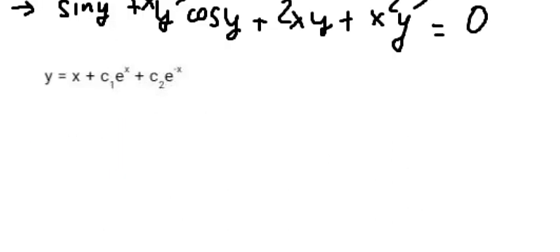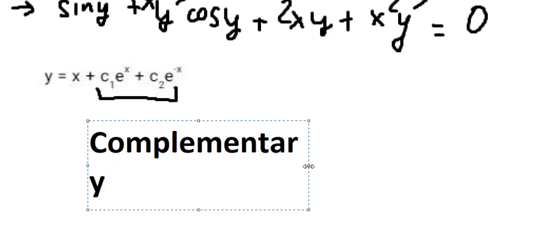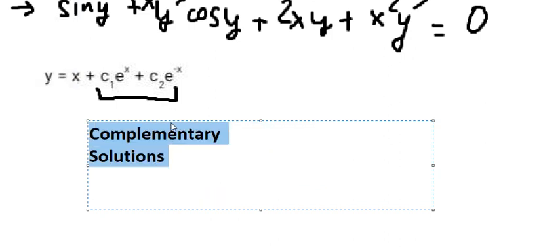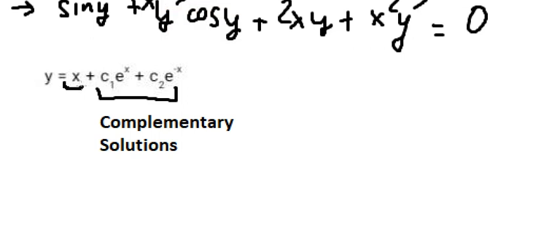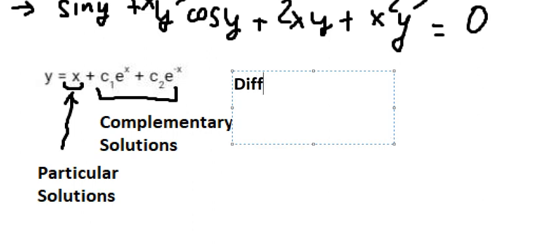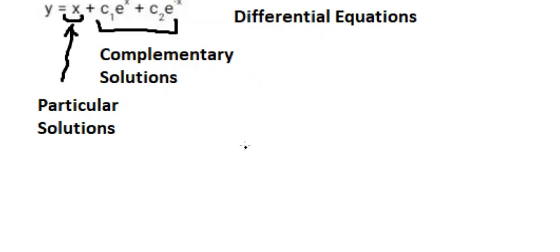Now let's go to the last one. For this one we can see that we have C₁ e to the power of x, plus C₂ e to the power of negative x. So this one is about the complementary solution, and this one is about the particular solution. So we need to apply differential equations.